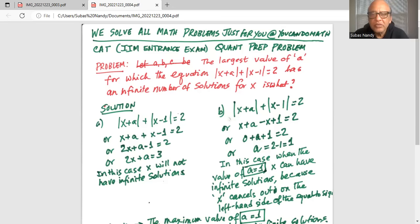Let's look at the other situation. |x+a| + |x-1| = 2. We can write the first absolute value as x+a. The next absolute value we can write as minus x minus 1, or -x+1.